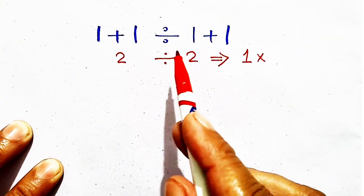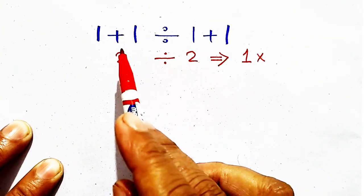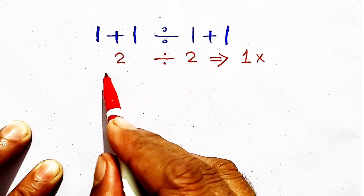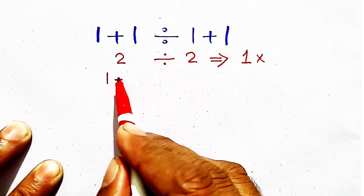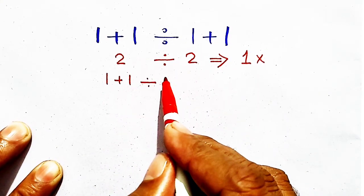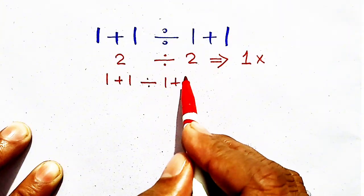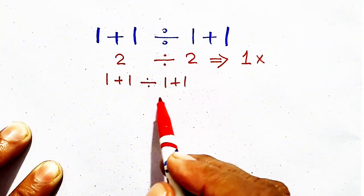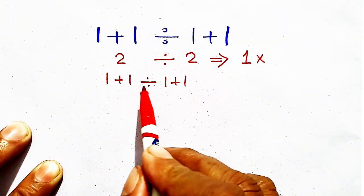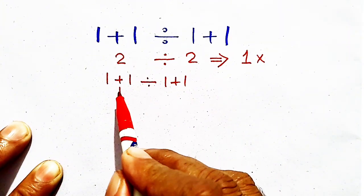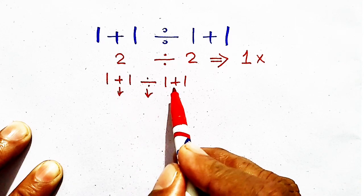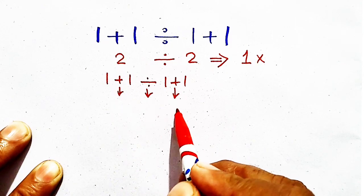The mistake is that we have not followed order of operations. The question is 1 plus 1 divided by 1 plus 1. We have 3 basic operations in this question: here is addition, here is division, here is addition.